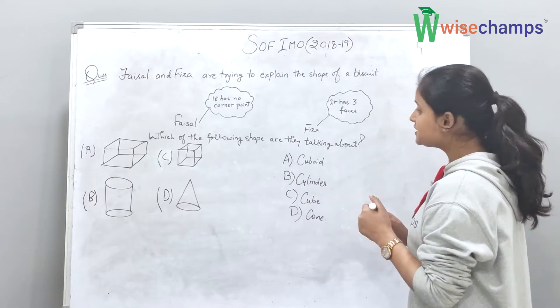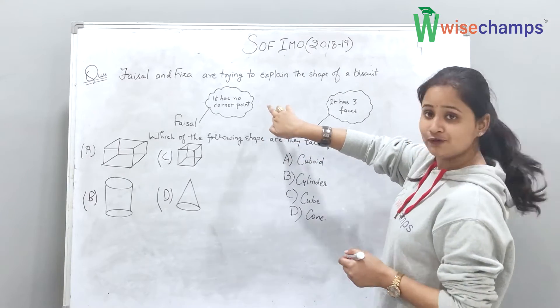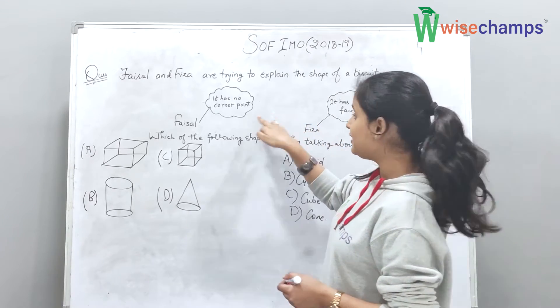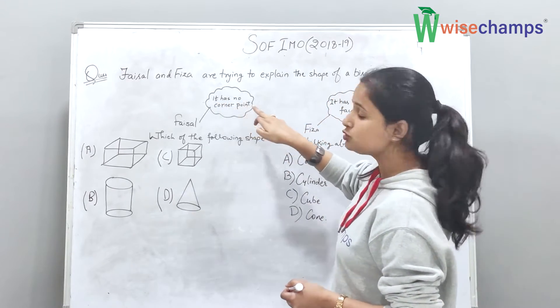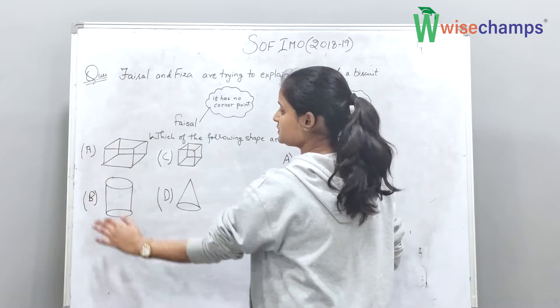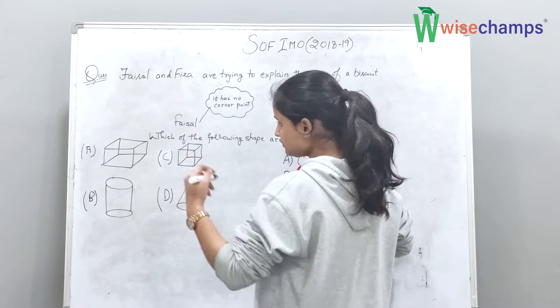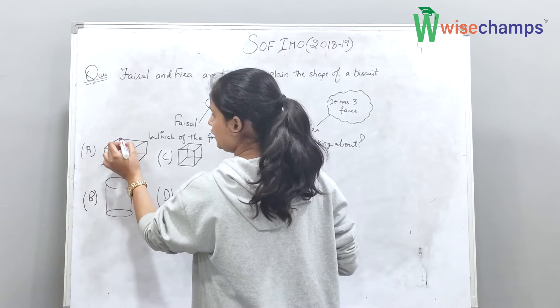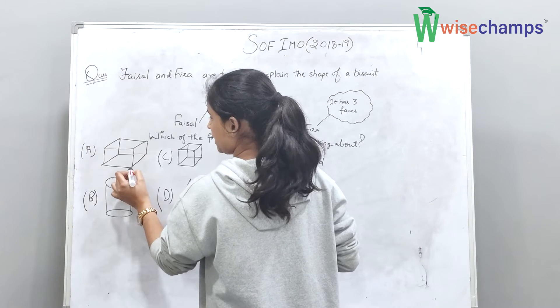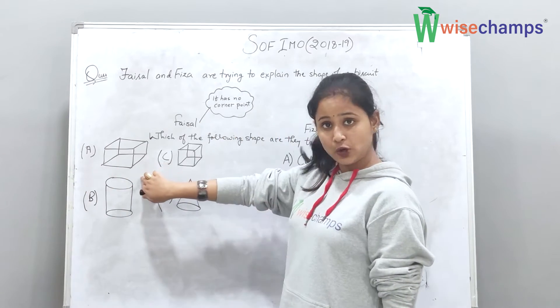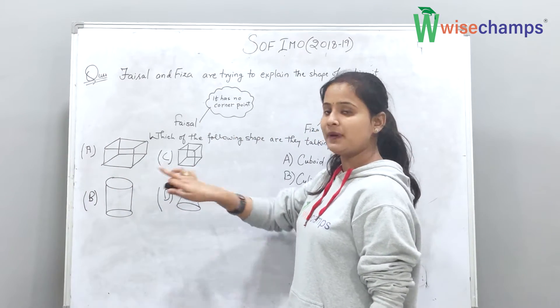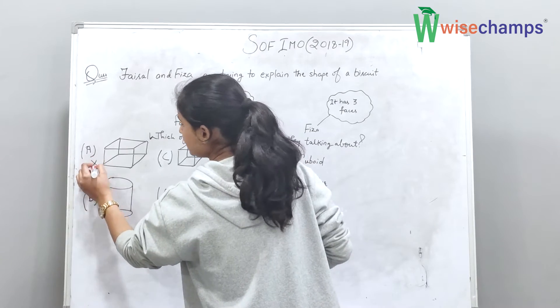Now we check the first point. The first point is, Faisal said it has no corner point. So we will check in these four shapes which one has no corner points. As we see in option A, here we have corner points. That means option A has corner points, so option A is not correct. Right?